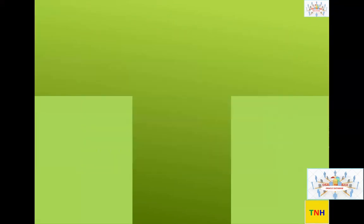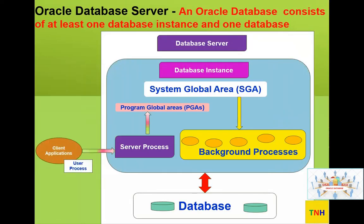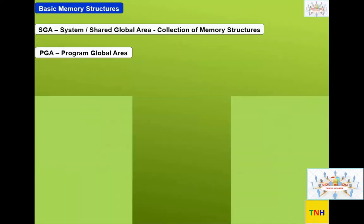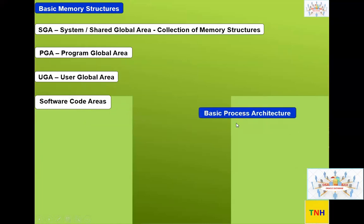We are almost at the last portion on HTA. On the memory side, you may remember we mentioned that we are going to cover SGA, PGA, and UGA, and then software code areas. After that, we are going to start the process architecture. This is the journey we have started up to now and this is what we are continuing.